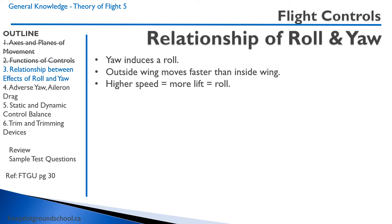There is a relationship between roll and yaw. If the aircraft yaws, it induces a roll. The reason it does this is because in a yaw, the outside wing moves faster than the inside wing. This creates more lift on the outside wing, raising that wing up and inducing a roll. Higher speed, more lift equals roll.